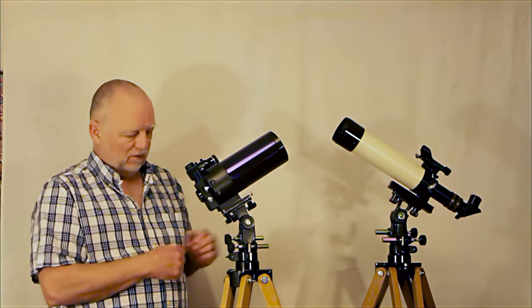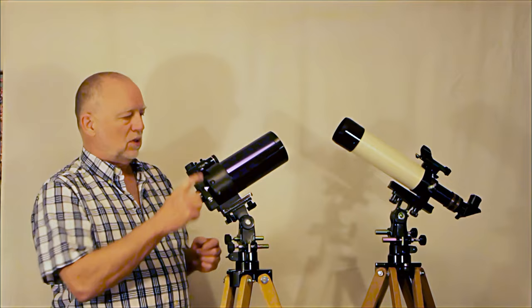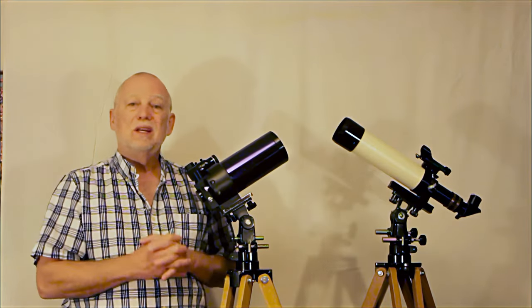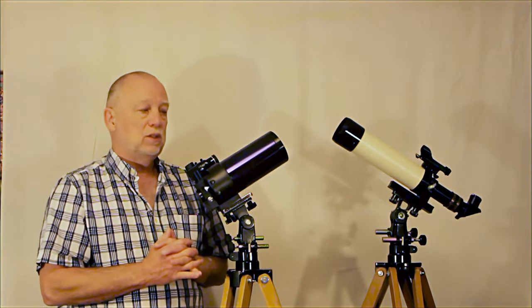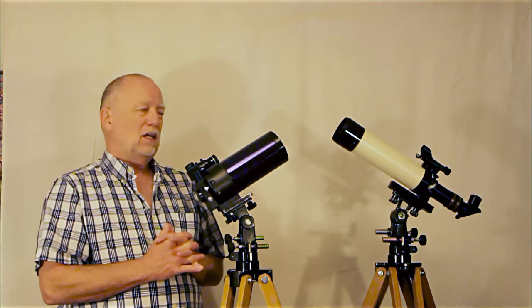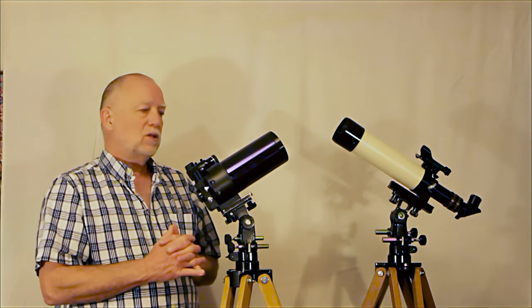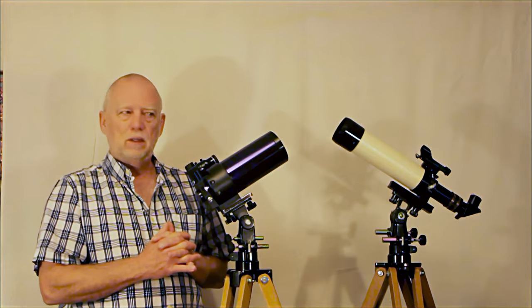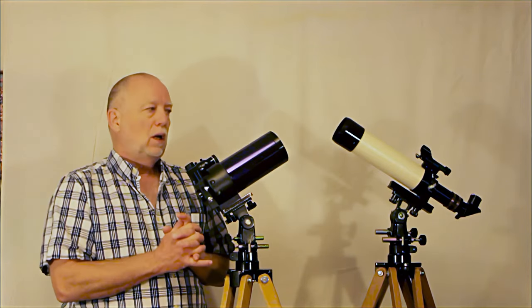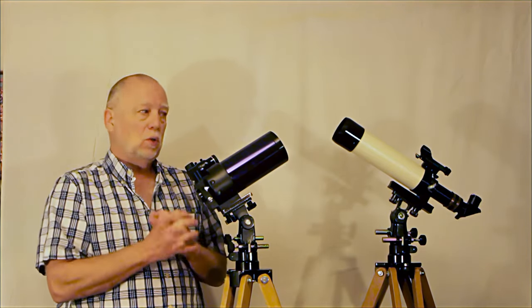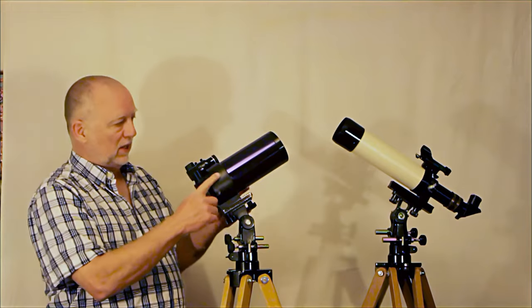So you have a couple of nice telescopes. This is a Meade, this is the 90 millimeter ETX. This is one of the early ones. It has extremely high quality optics. This comes on a fairly inexpensive but functional plastic mount, but you can also take it off that mount and put it on this.